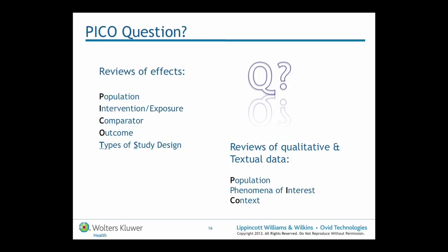You will have heard of systematic reviews of effects or effectiveness, which fuel the Cochrane Library and a lot of the Joanna Briggs Institute — the JBI database of systematic reviews and implementation reports. These types of reviews focus on the effectiveness of an intervention or therapy, often used in medical, nursing, allied health, and health professions practice. The PICO mnemonic, which many of you as librarians will be clearly very familiar with, simply refers to the population, the intervention, the comparator, and the outcome. Sometimes you'll see that extended to PICOT — the types of studies or timing of an intervention — or PICOS referring to study design.